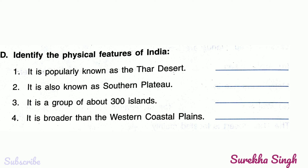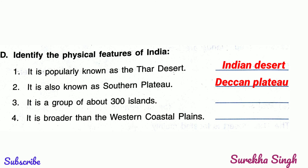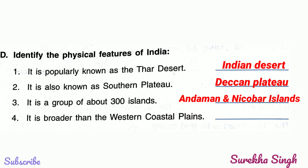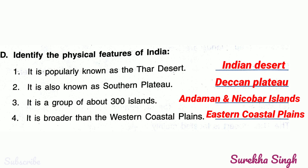Next, Question D: Identify the physical features of India. 1. It is popularly known as the Thar Desert — the Indian Desert is popularly known as the Thar Desert, so we write Indian Desert. 2. It is also known as the Southern Plateau. 3. It is a group of about 300 islands — the Andaman and Nicobar Islands. 4 & 5. The Eastern coastal plains are broader than the Western coastal plains.